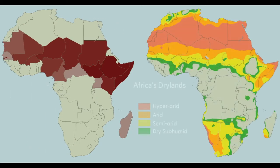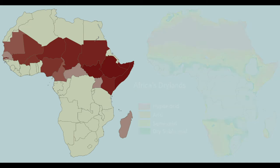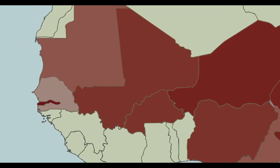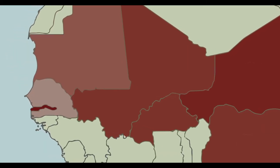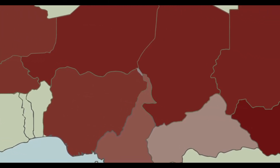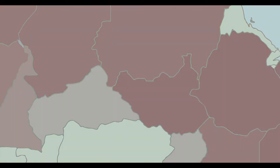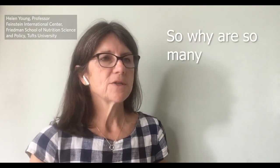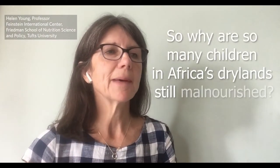When we look at a map of the dry land regions of Africa, we can see that many of the regions suffering persistently high rates of malnutrition are in fact dry land regions stretching across the Sahel and East Africa and including parts of Southern Africa. Our study found emergency rates of malnutrition even in places where there was no obvious emergency and where organisations have been providing nutrition services for a long time. So why are so many children in Africa's dry lands still malnourished?